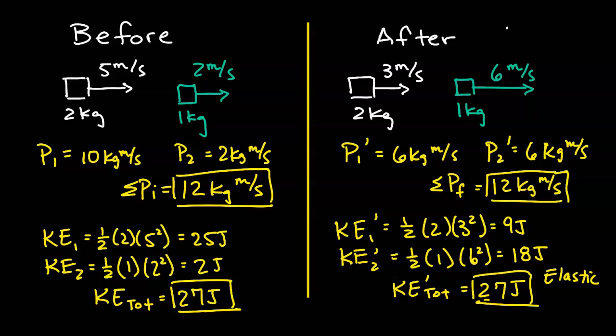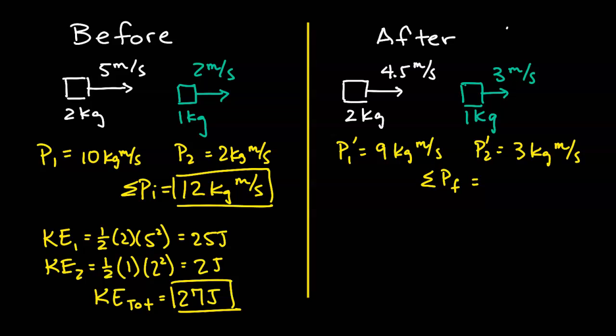Let's take a look at another situation. We're using the same starting objects — object 1 has a mass of 2 kilograms and object 2 has a mass of 1 kilogram. However, after the collision, object 1 has a velocity of 4.5 meters per second and object 2 has a velocity of 3 meters per second, which is different than in scenario 1. We calculate the momentum after the collision: object 1 has a momentum of 9 kilograms meters per second and object 2 has a momentum of 3 kilograms meters per second, giving a net final momentum of 12 kilograms meters per second, as expected for an isolated system.